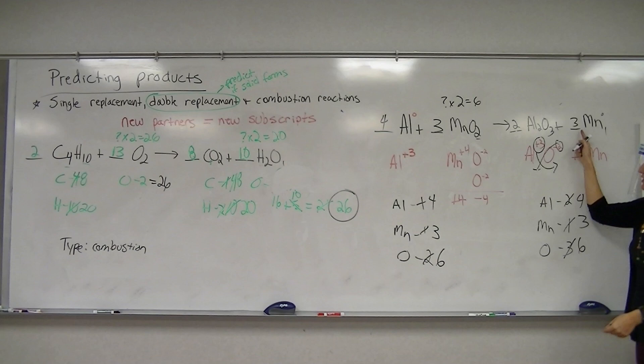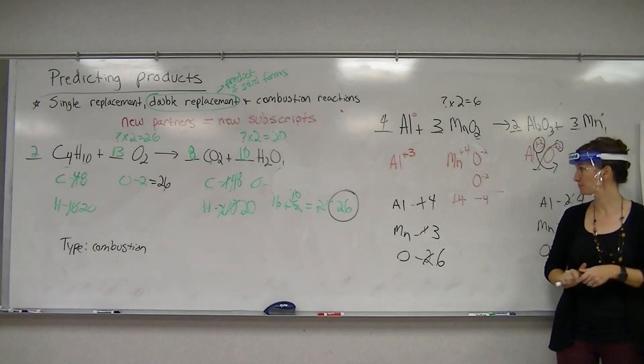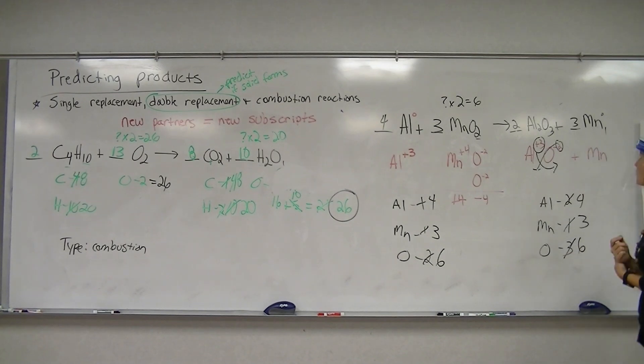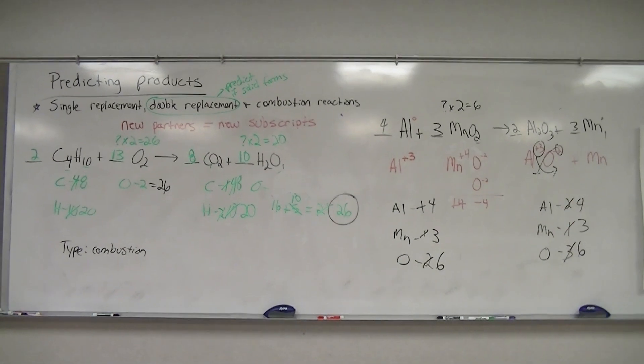And four to three to two to three. So I have my odd numbers, so I know I don't need to reduce it down further. Any questions on that one?